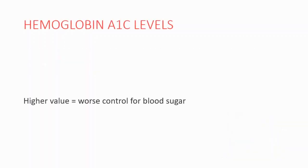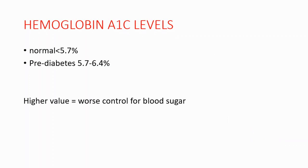Normal hemoglobin A1C levels are lower than 5.7%. Pre-diabetes levels are around 5.7% to 6.4%, and a result of more than 6.5% means that you have diabetes. If you have a high value, you have worse control of your blood sugar.